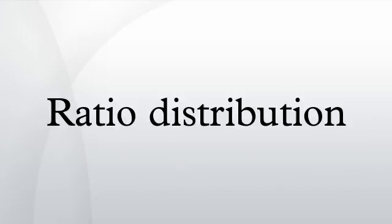A ratio distribution is a probability distribution constructed as the distribution of the ratio of random variables having two other known distributions. Given two random variables x and y, the distribution of the random variable z that is formed as the ratio is a ratio distribution.